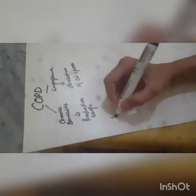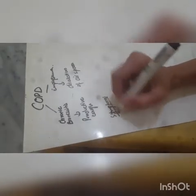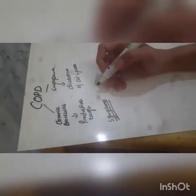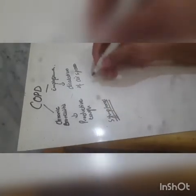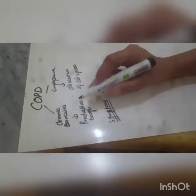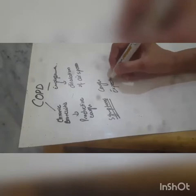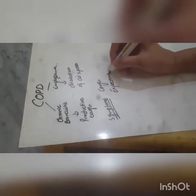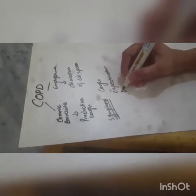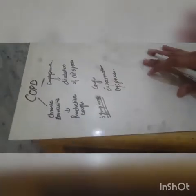We are going to have symptoms. In chronic bronchitis, there is cough — that is productive cough — and expectoration, or dyspnea. This is all basic for COPD, chronic obstructive pulmonary disease.